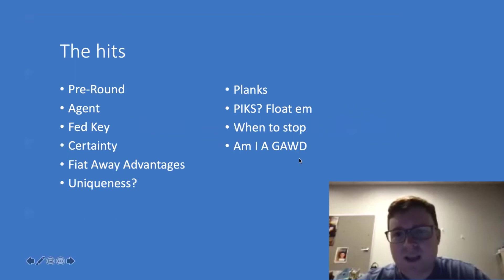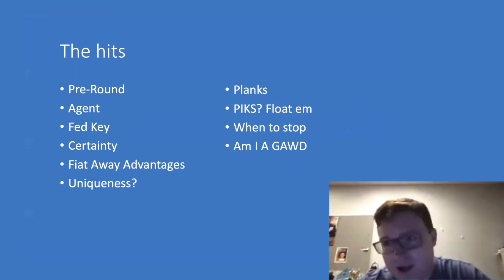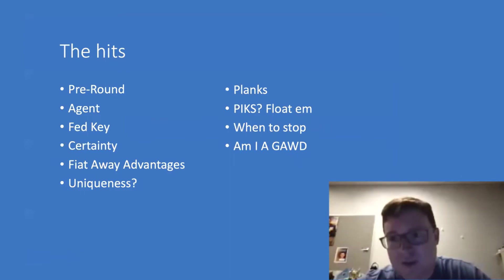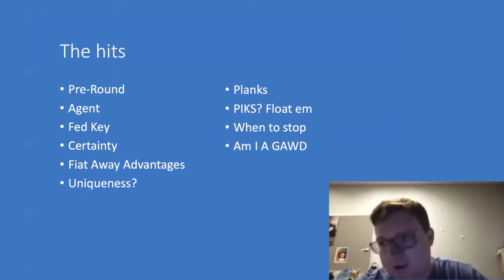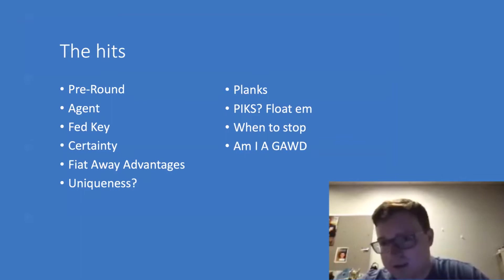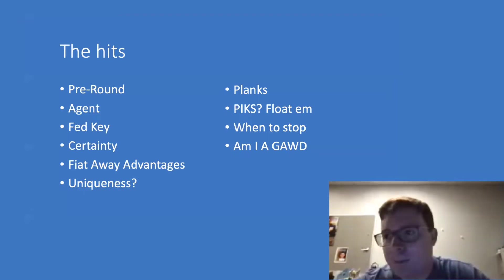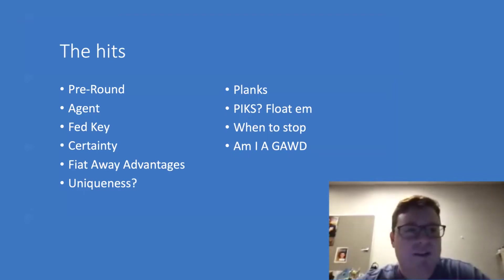This lecture is not so much about what fiat is and the different ways you can argue fiat. It's more about how abusive you can be with fiat and what tools you can have in the event that you don't have a case neg, don't have advantage answers, or get popped on something. How can you fiat away something so that you can still win a debate? This is going to be recorded — I can share the PowerPoint, but just jot down a few things as I go from slide to slide.